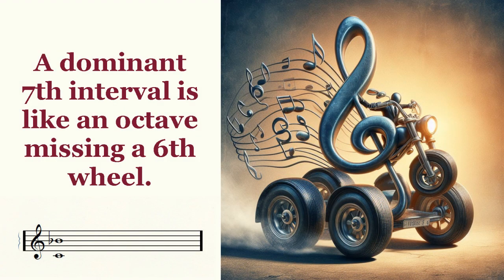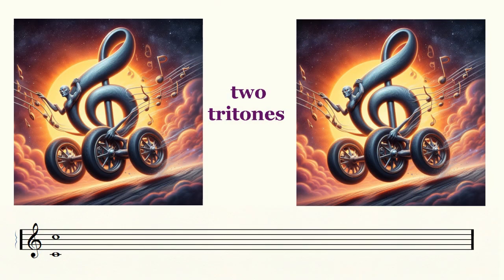Then we come to five tones. We see this interval most of all in dominant seven chords — it will have five wheels. We can actually call it a dominant seventh interval regardless of its spelling. And finally we have the octave, which is six tones. Let's use two tricycles for the octave.